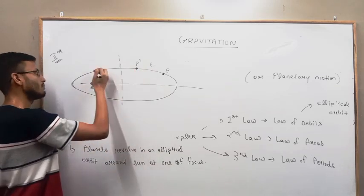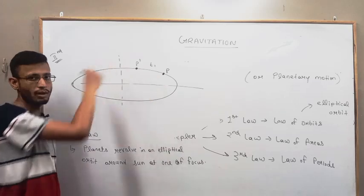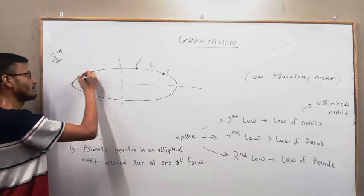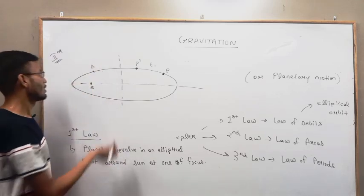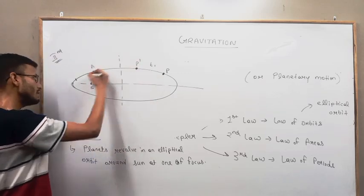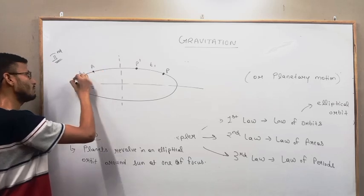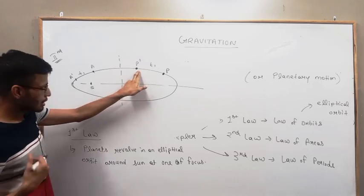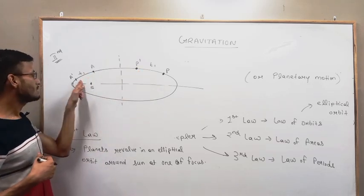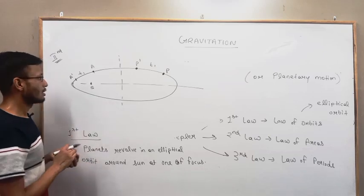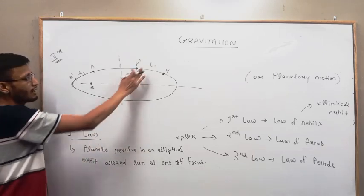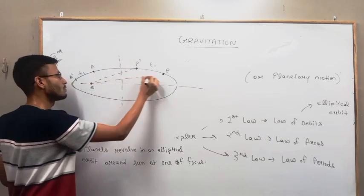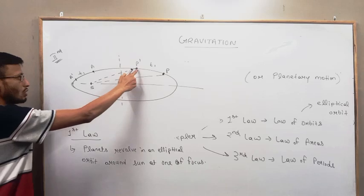In the same time, now the planet covers this path in some time interval. Now at some instant, say at point A, in time t1 the planet moves from A to A dash. It also takes 2 seconds. That is, the time intervals are same here and here. Now join these lines.